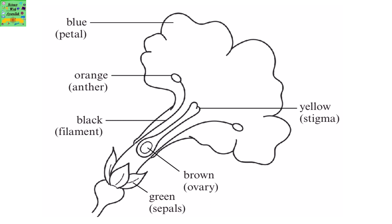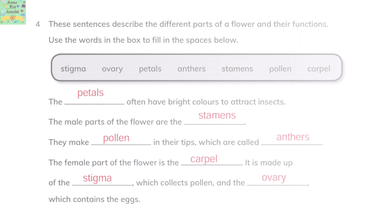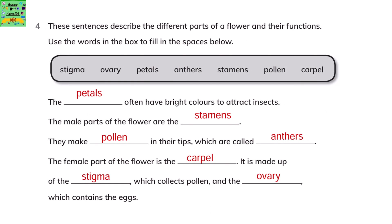You can color it in your book if you have the book. These sentences describe the different parts of a flower and their functions. Use the words in the box to fill in the spaces below. The petals often have bright colors to attract insects.